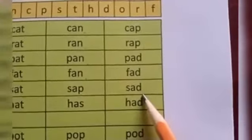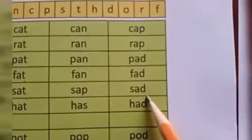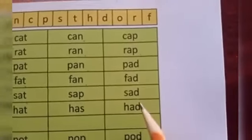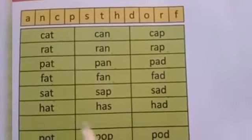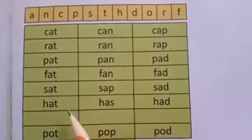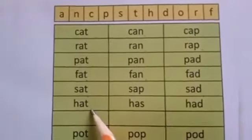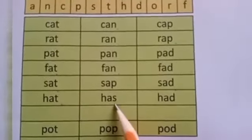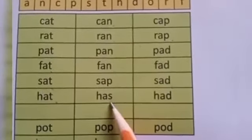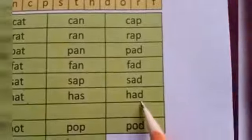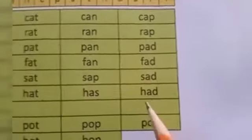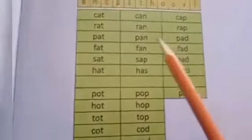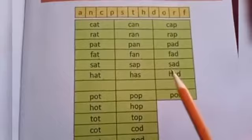See here the ending sound is different but the starting sound and the vowel they are same. Hat. Has. Had. So these were the A vowel words.